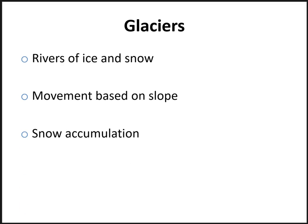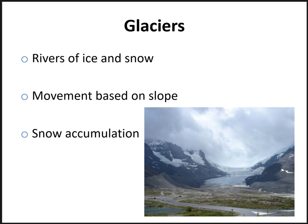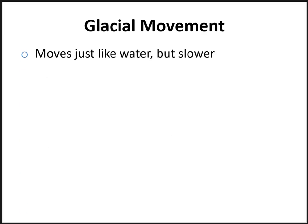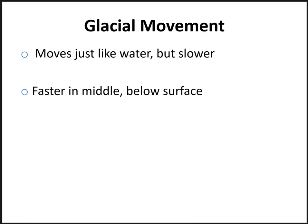It all comes down to how much snow is going to accumulate in these upper elevations. Here is an image of the Columbia Ice Field in the Canadian Rockies. We can see the ice moving down the center of that valley that it's carved over millions of years. Glacial movement is very similar to water, but slower. Water moves the fastest in the middle, just below the surface, and the same thing is true with glacial ice.